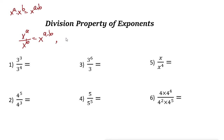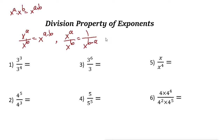This is the first rule. The next rule is: x to the power of a over x to the power of b can also be written as 1 over x to the power of b minus a. If you move a term to the other side of the fraction, the sign of the power changes — positive becomes negative and negative becomes positive. The third rule is: 1 over x to the power of a, if you bring it up, becomes x to the power of negative a. So three rules. Let's look at some examples.